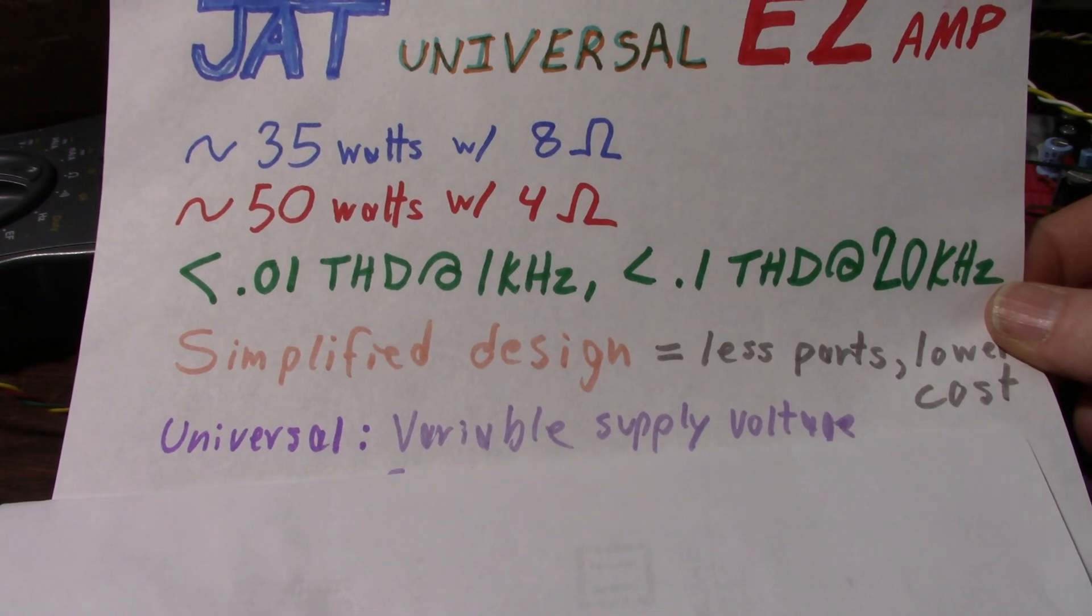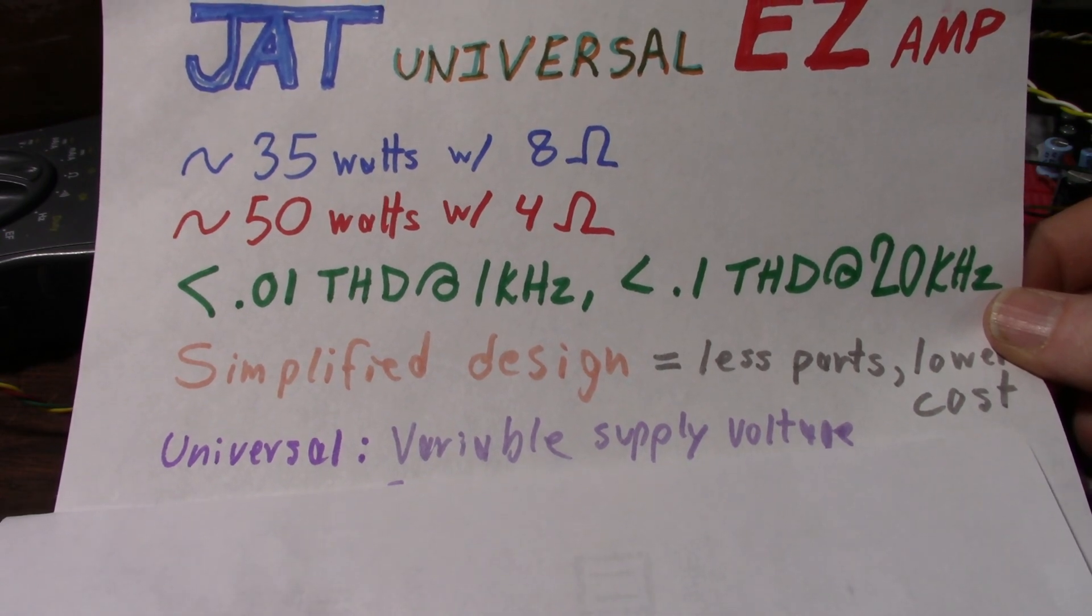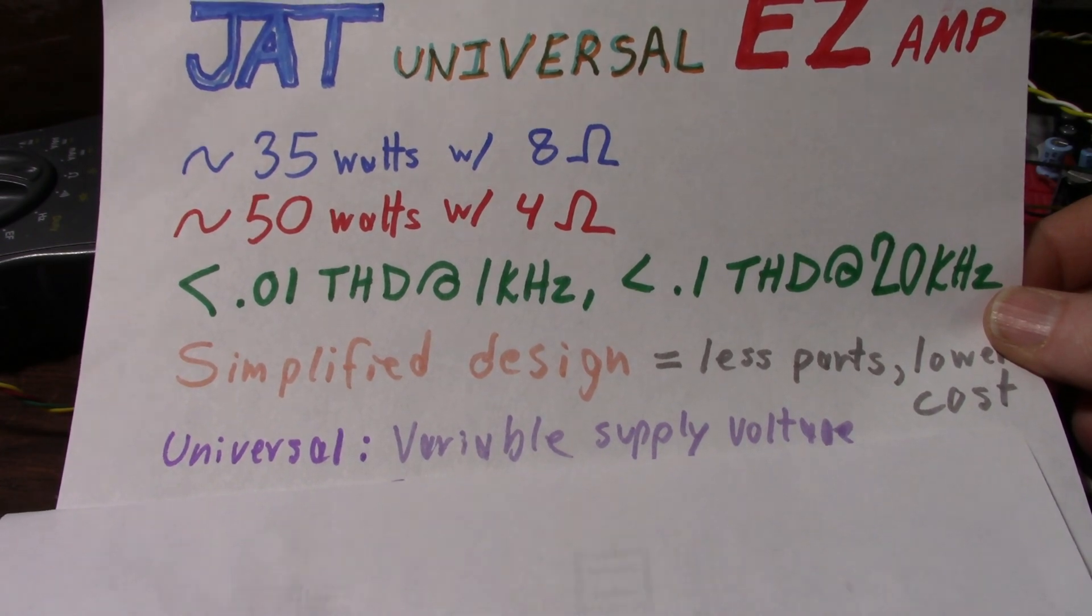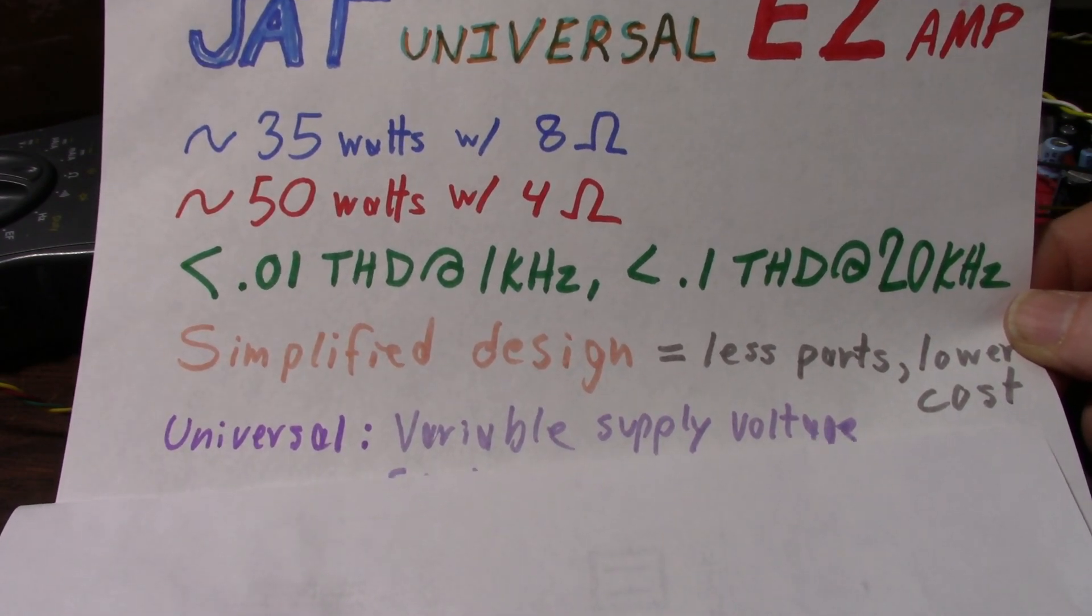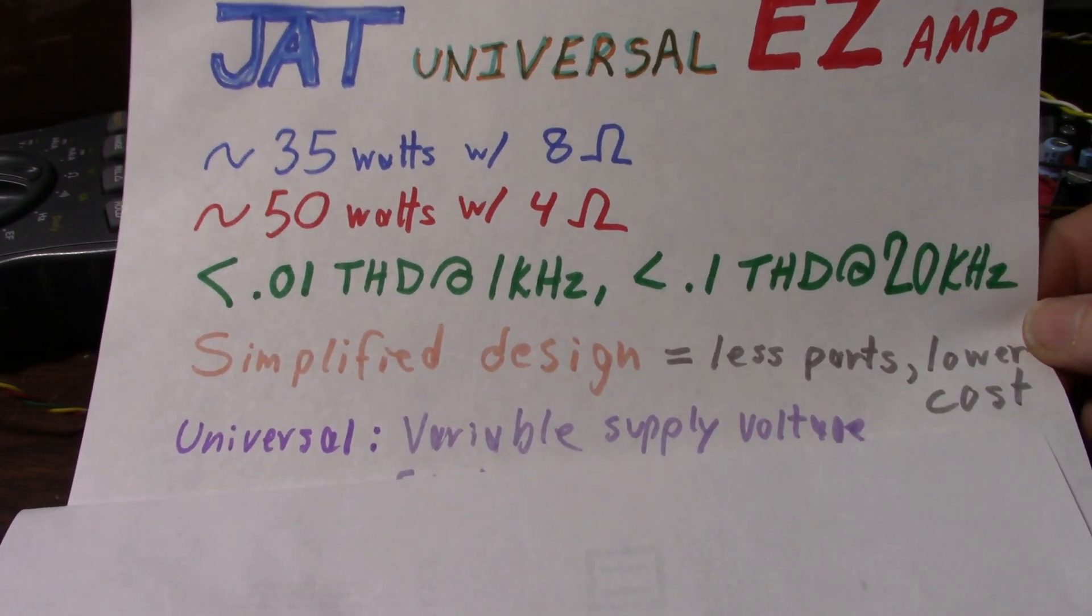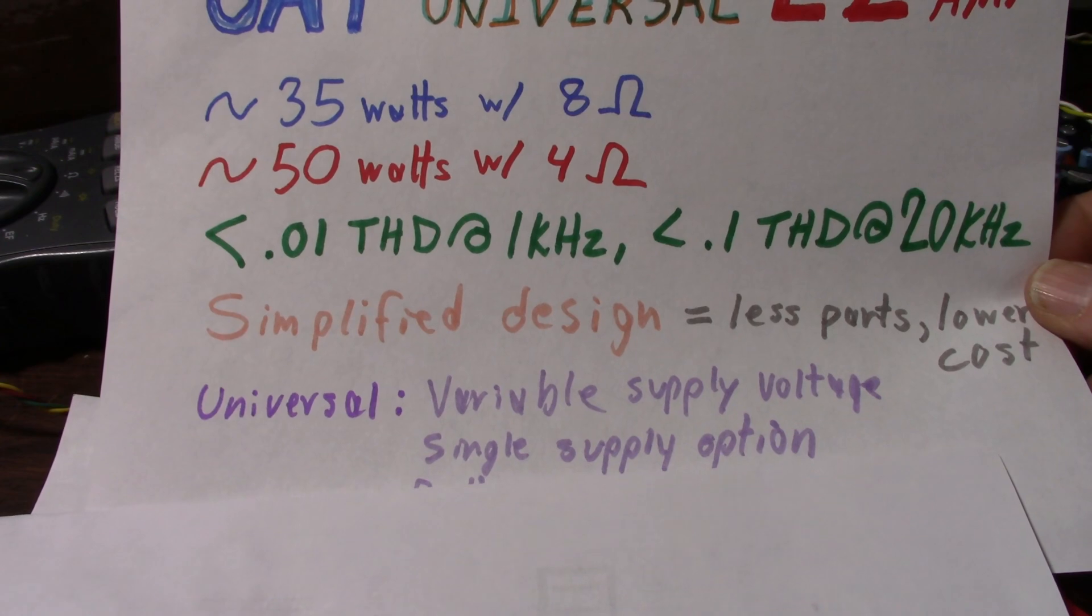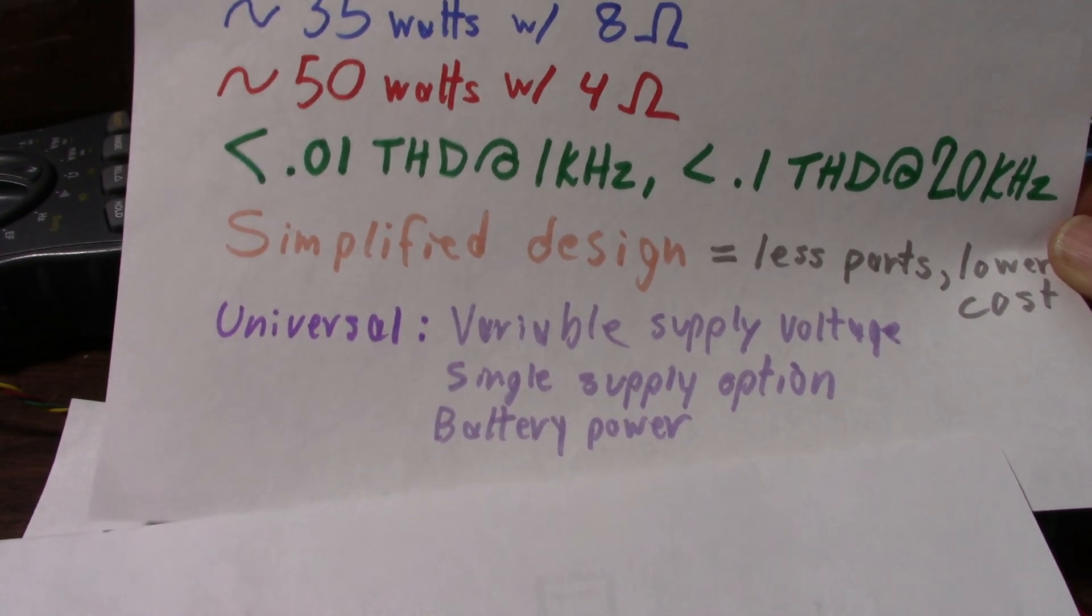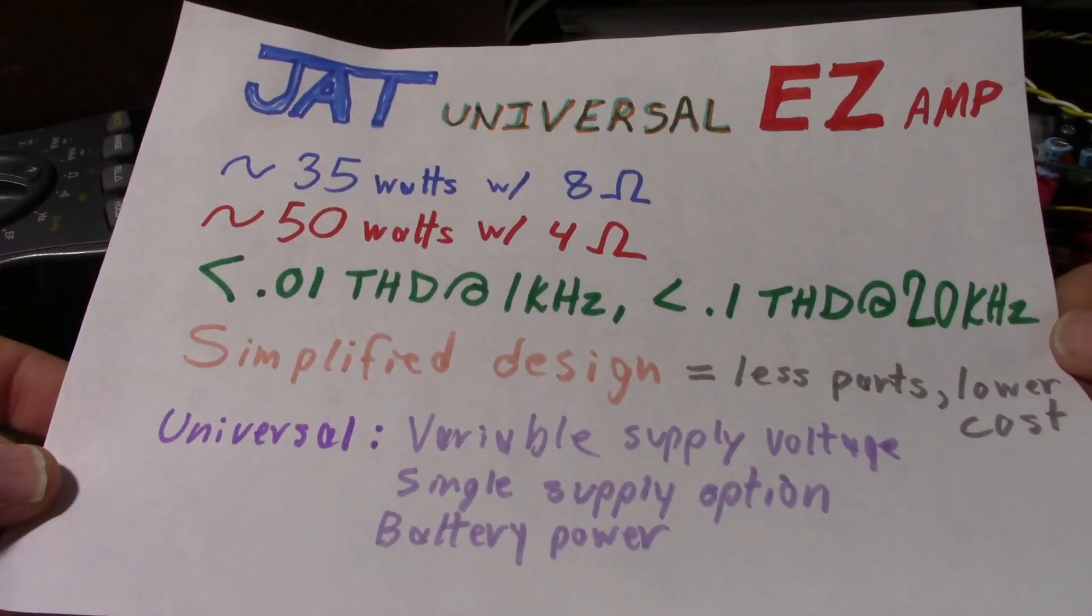I was calling it universal so you can power it with different voltages up to a certain amount. It'd probably run at around plus minus 28 volt rails or maybe 30 volt rails. I don't know yet. I'm going to do some calculations. But if you wanted, you can run it down a much lower voltage, like maybe a couple 12 volt batteries if you want to make it portable. Of course, you'll get less power with less voltage. A single supply option. Yeah, I don't know if I'm going to do that or not. I already mentioned battery power. So there you have it. This is what it's all about. This amplifier here.